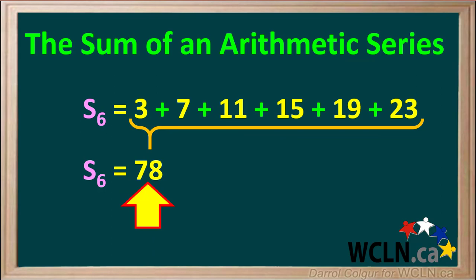The sum of a short and simple arithmetic sequence can be found by simply adding up all the terms. In this example, all six terms add up to 78, so 78 is the sum S6.